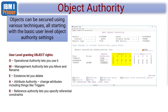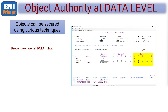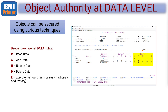We can also assign authority to the data within those specific objects. The data rights on the green screen are the ability to read data, add data, update data, delete data, or execute data. Execute is an interesting one — it lets you run a program or search for it in a given directory. You'll notice on the left-hand side there are some special values: public and group. This authority setting explicitly shows there is a user profile called sysadmin who has asterisk-all rights, so that person is essentially God and can do anything with this object.